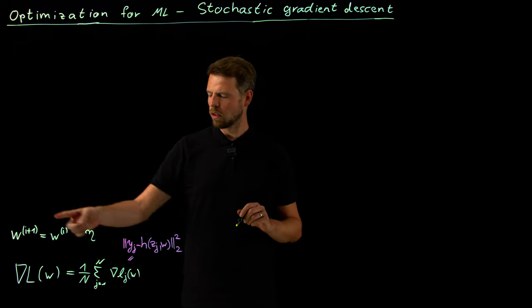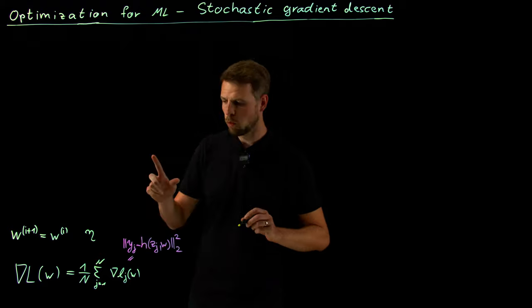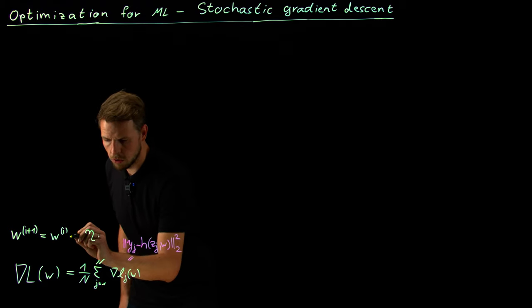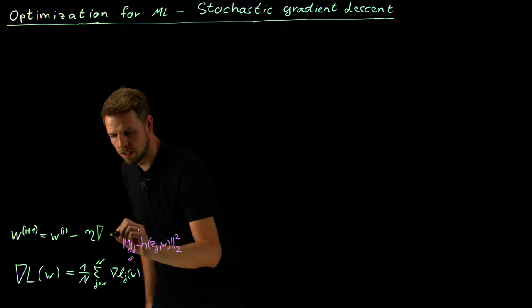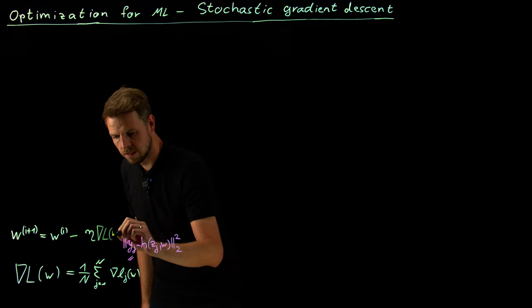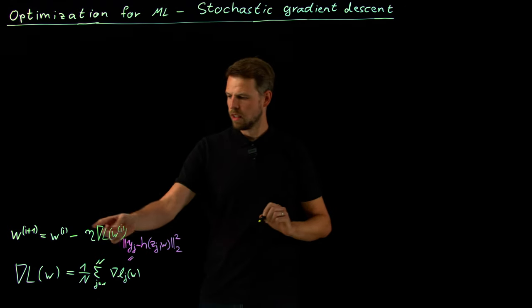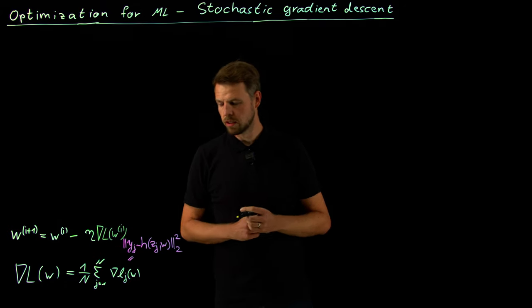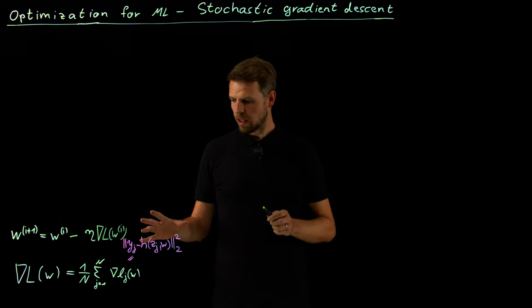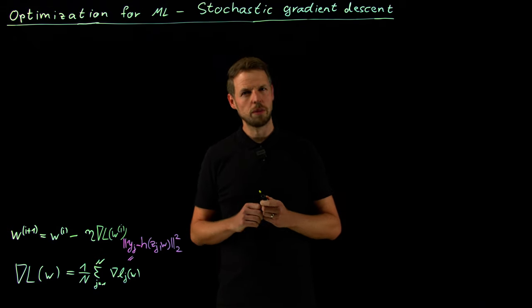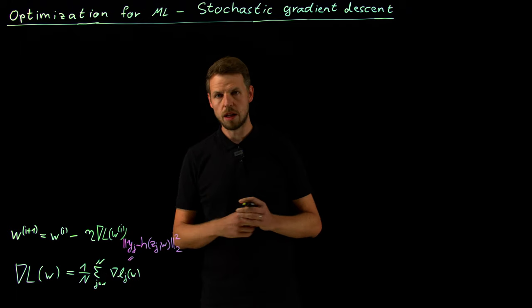What we had in the general setting was the update is Wi plus eta times V. What we have also seen is then in most settings that we are interested in, we consider the steepest descent direction, which is that we take as our V minus the gradient of the loss function. And so what I would like to address now is the question what if this is not so cheaply evaluated.